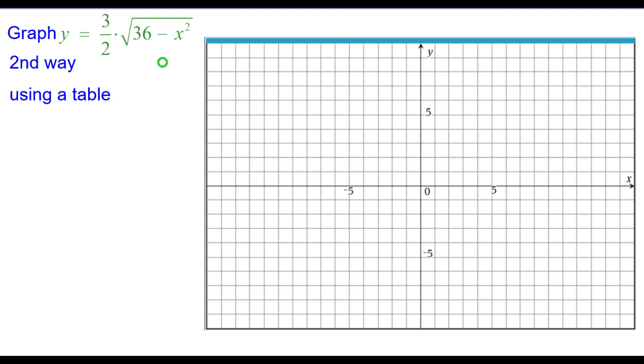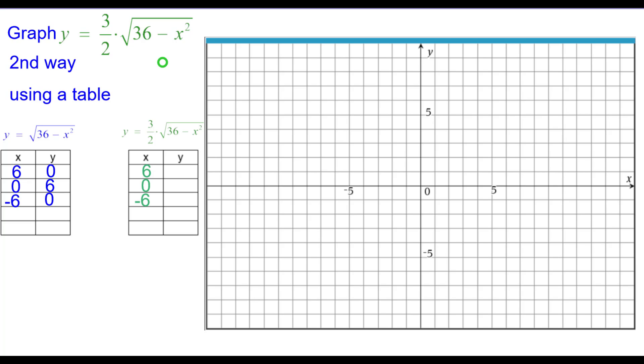The second way is using a table. So we'll go ahead and look at what's inside the radical and we're going to be using these three values for our x. And we're going to need to multiply each y value by three-halves because of that coefficient there.